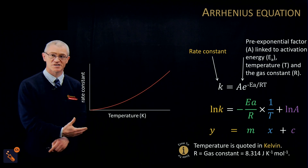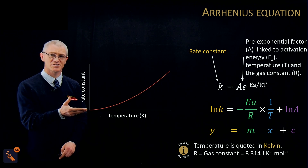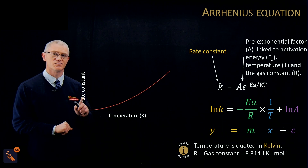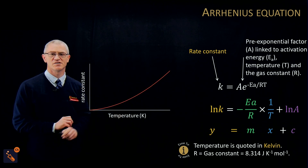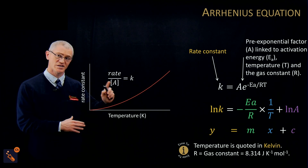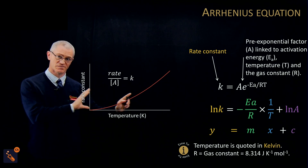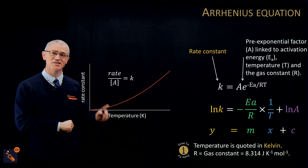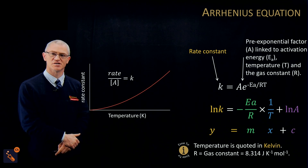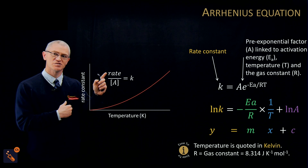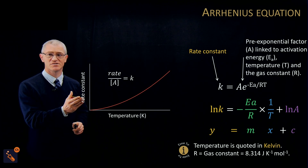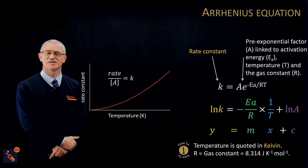Let's quickly go over why you can do this. We have a graph showing rate constant against temperature, and as temperature goes up the rate constant goes up — a positive curve. This can be explained using the rate equation: as temperature increases, the frequency of collisions increases, the numerator increases, and therefore k goes up. This just means we get a varying value of the rate constant as temperature changes.